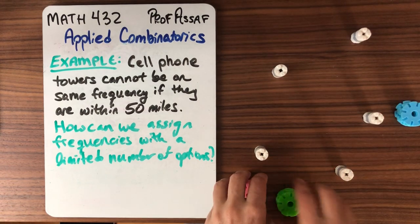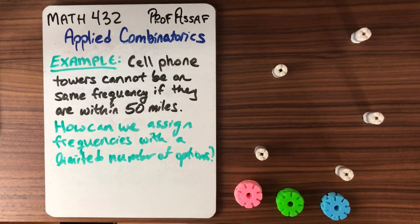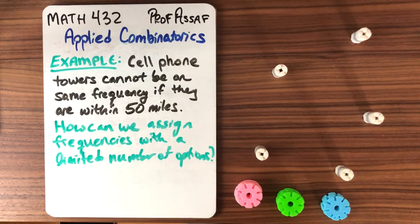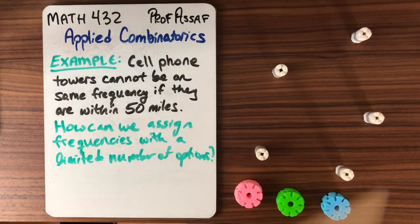So let's say these are our frequencies, pink, green, and blue, and now we have to assign them. Now I'll say close together maybe 50 miles in theory, but we'll say a popsicle stick means that they're too close together to get the same frequency.